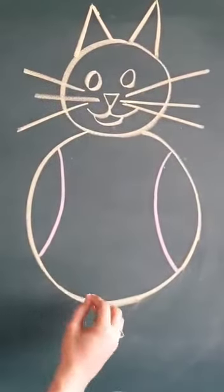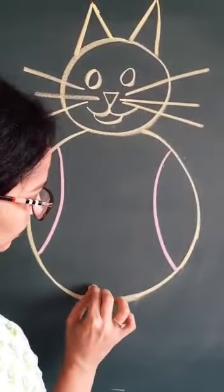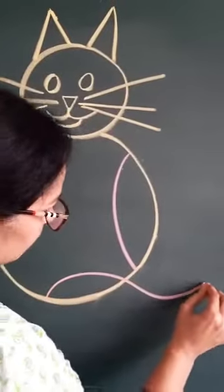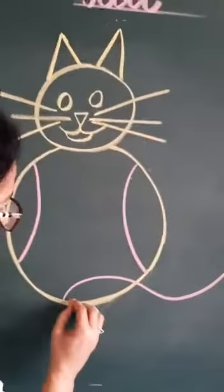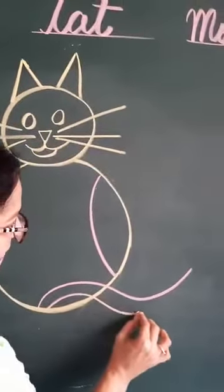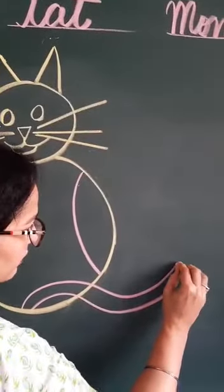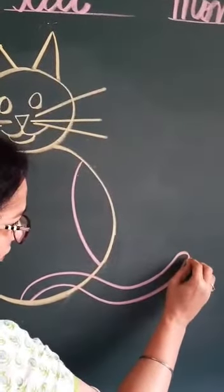Abhi hamne iske tail banani hai. Cat ki tail hotte hai na long tail. Yes, curve. Now, ishi ke parler ek or curve banayenge ham aise. And join it with the curve. Curve. Okay, beta.